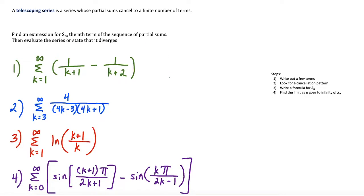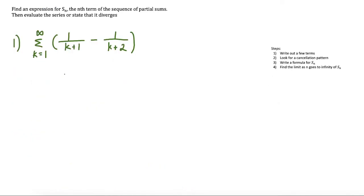We have four examples here and we're going to get started. For the first question, we're going to go through the steps. The first thing we want to do is write out the first few terms. When k is equal to 1, we have 1 over 1 plus 1, which gives us a half, minus 1 over 1 plus 2, which is 1/3. That would be the first term of the sum if we were only going out to k equals 1.